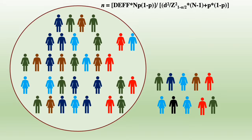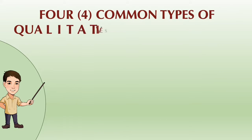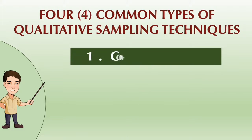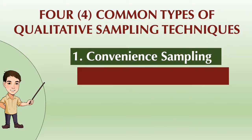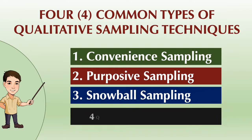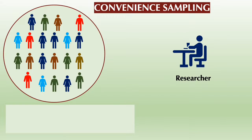The study's research objectives and the characteristics of the study population will help determine the researcher's choice of participants and how many participants should be included in the study. This video will discuss the four common types of qualitative sampling techniques: convenience sampling, purposive sampling, snowball sampling, and quota sampling.